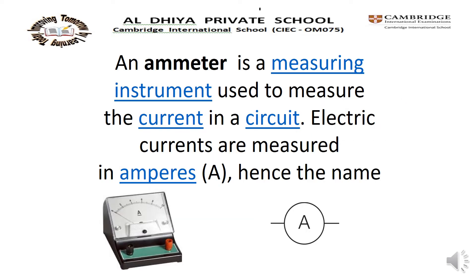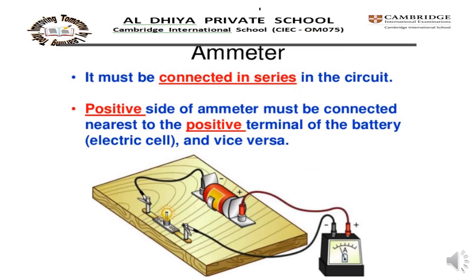How do we measure the current? Look here — this is the image of an ammeter. An ammeter is a measuring instrument used to measure the current in a circuit. The electric currents are measured in amperes, hence the name. Look at the symbol. We can see how the ammeter is connected in a circuit. The positive side of the ammeter must be connected to the positive terminal of the battery.